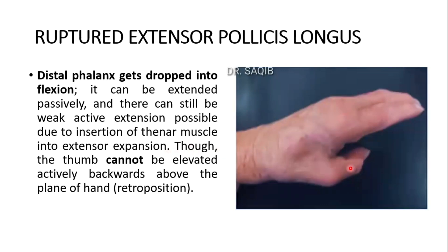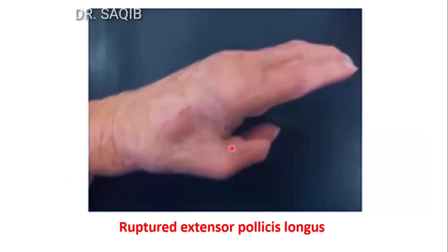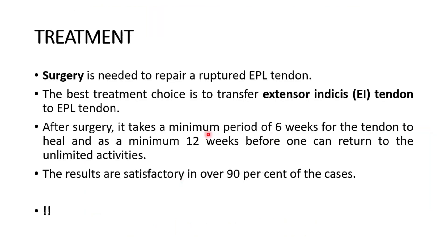Looking at the picture of the deformity, you can see the thumb has dropped into a position of flexion and cannot be extended actively. The distal phalanx drops into flexion; it can be extended passively and there can still be weak active extension possible due to the insertion of the thenar muscles into the extensor expansion, though the thumb cannot be elevated actively backwards above the plane of the hand — that is called retro-position. Here in the enlarged picture you can see the dropped thumb in the state of flexion.